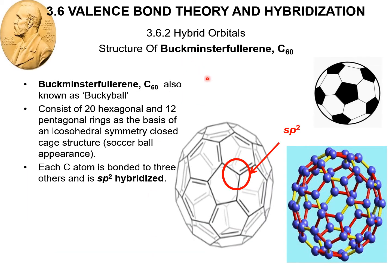A bit about buckyball: C60 is also named Buckminster Fullerene. It consists of 20 hexagonal and 12 pentagonal rings as the basis of icosahedral symmetry, forming a close cage structure — so it looks like a soccer ball. The type of hybridization here is SP2 hybrid.